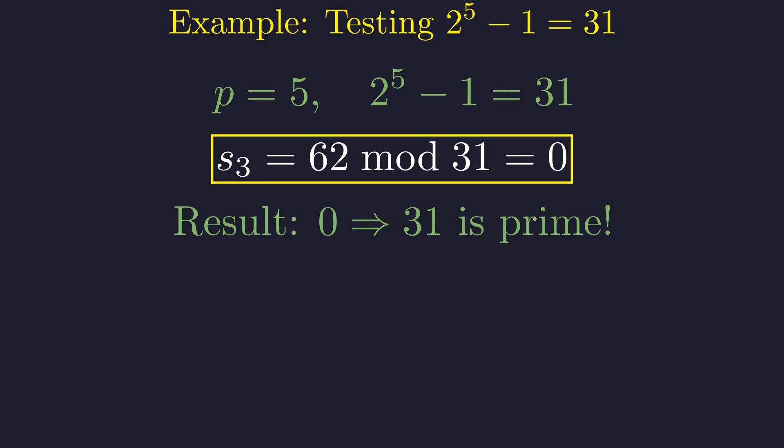And there it is. We got 0, which confirms 31 is prime. This method scales even to colossal exponents like 127.